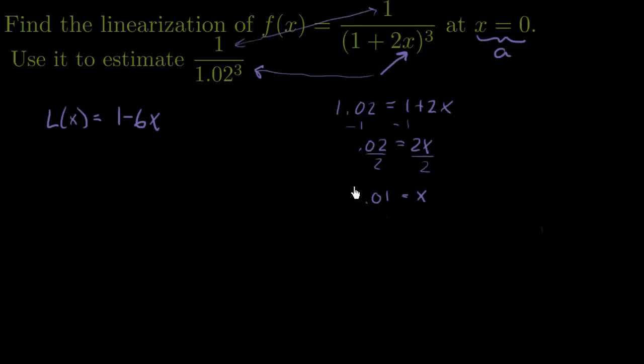So if I want to find this right here, 1 over 1.02 cubed, I need to plug in 0.01 into here. Now remember that L(x) is approximately the same thing as f(x). So if 1 over 1.02 cubed is the same thing as f(0.01), then I need to plug in to my linearization 0.01. So let's go ahead and do that now.